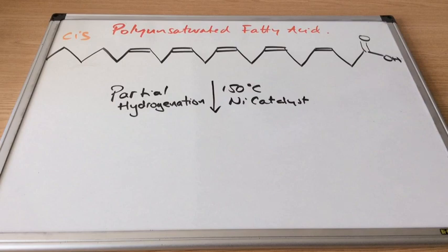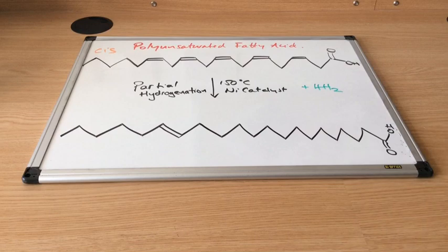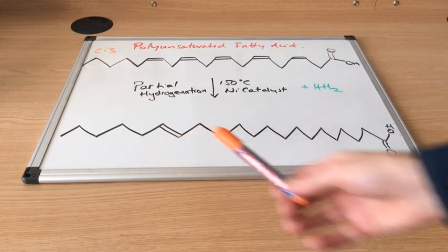So what we're doing is we're carrying out the partial hydrogenation of this unsaturated fatty acid. Now, we study hydrogenation of ethene at AS. And that's carried out at 150 degrees C and uses a nickel catalyst. And essentially, we're doing the same reaction, so the conditions are the same. Now, I'm going to use four moles of hydrogen. So I don't want to fully hydrogenate it. So I'm going to leave one of the double bonds intact. So I've partially hydrogenated this fatty acid. I've added four moles of hydrogen. So I've lost four of the double bonds. You can see I've lost these four here.